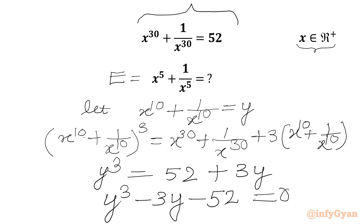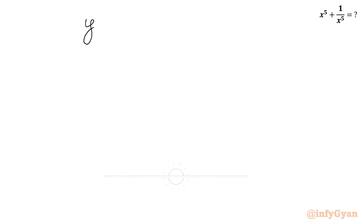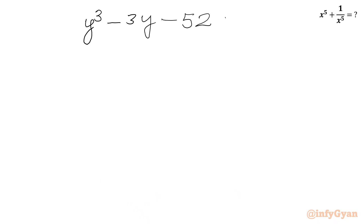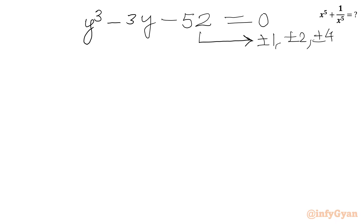Now we have to solve this cubic equation using the rational root theorem and synthetic division method. So we write y cubed minus 3y minus 52 equal to 0. We need to find the eligible factors of 52 first: plus or minus 1, plus or minus 2, plus or minus 4, plus or minus 13, and so on. The leading coefficient is 1, so we consider only plus or minus 1.